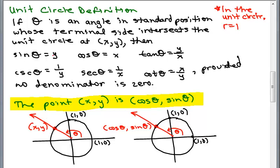Then the sine of θ is simply y. The cosine of θ is simply x. The tangent and cotangent are defined exactly the way it was in the previous definition. The cosecant of θ is 1 over y and the secant is 1 over x. And again, we have to make sure the denominator is not 0.